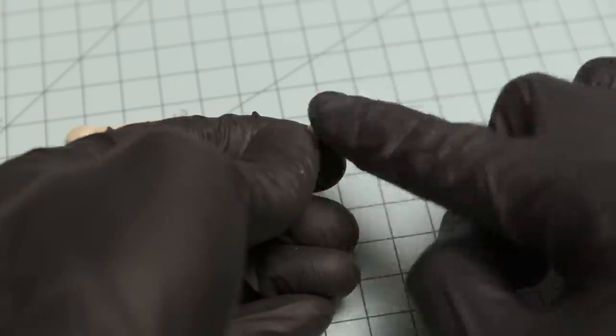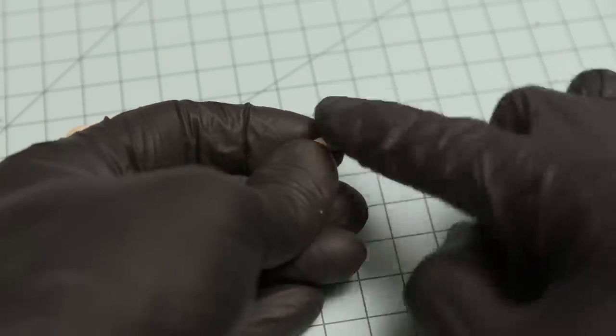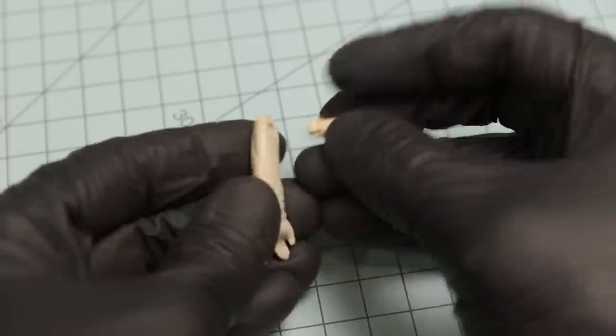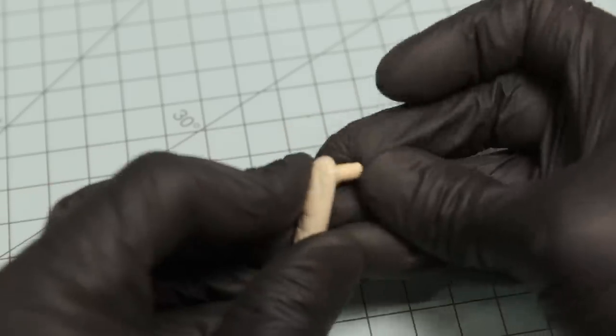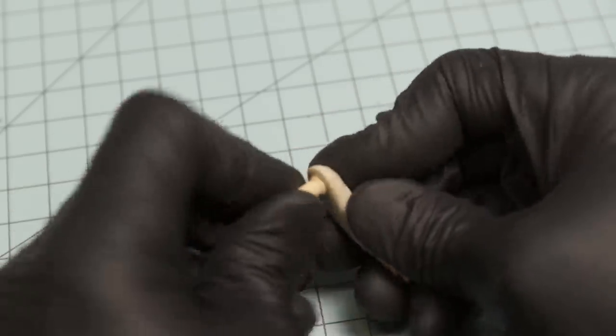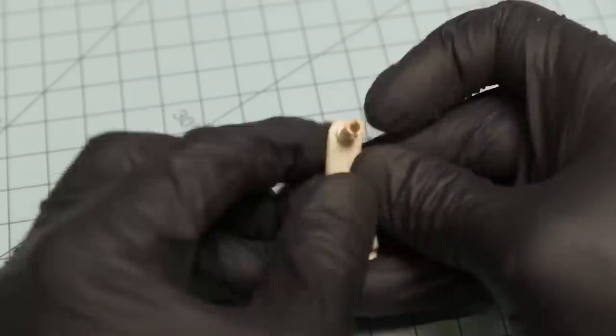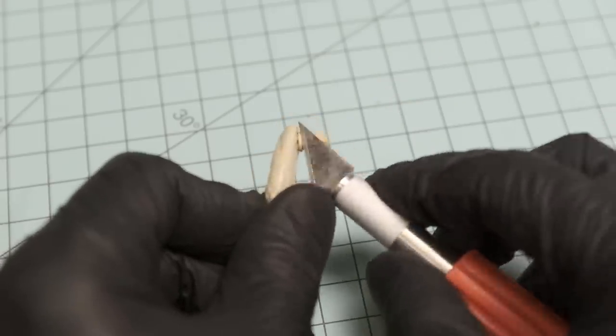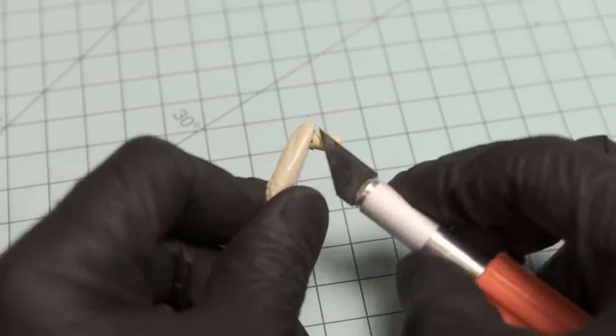And of course, you can take you some little sandpaper and go ahead and sand on it smooth, whatever you would like to do. But just for this purpose right there. What I'm going to do is glue this in now and then we're going to trim up that little edge right there, that little collar.